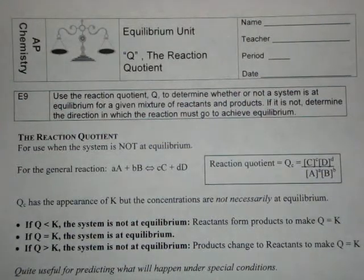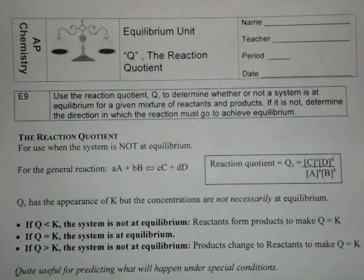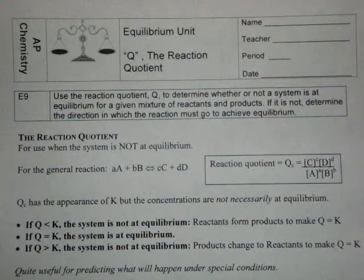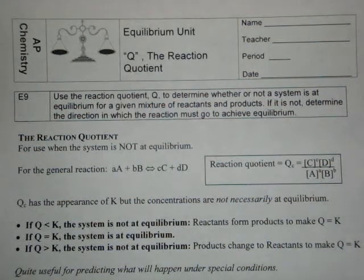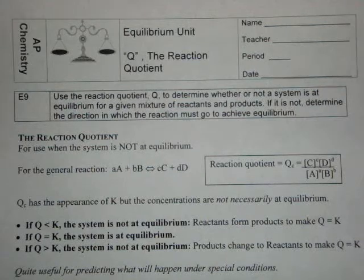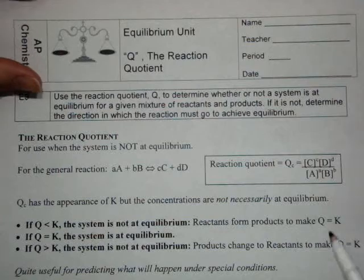Today we're going to look at the reaction quotient, which is called Q, and we're going to look at how the reaction quotient is related to equilibrium and how we can use it to determine which direction a system is going to proceed or shift. It's very similar to KEQ or K.